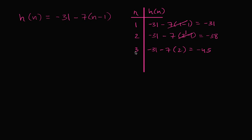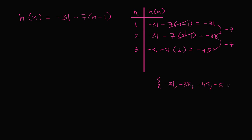So what do we see happening here? We're starting at negative 31, and then we keep subtracting seven. We subtract seven one fewer times than the term we're dealing with — for the third term we subtract seven twice, for the second term we subtract seven once. The sequence is negative 31, negative 38, negative 45, negative 52, and you keep subtracting seven.